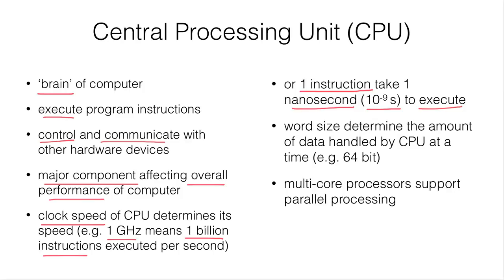We call the amount of data naturally handled by the CPU at a time the "word size." For example, a 64-bit CPU means the CPU can process 64 bits of information at a time. We call this a word size.